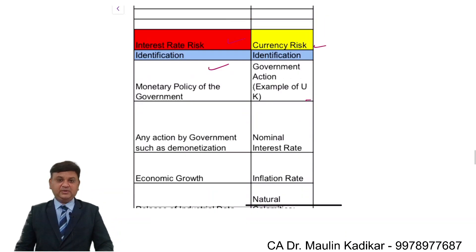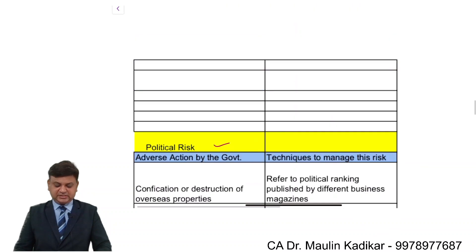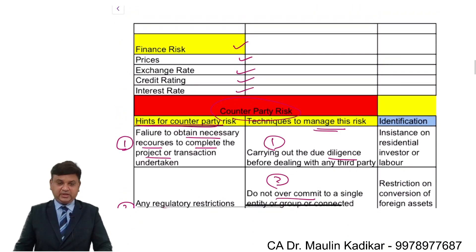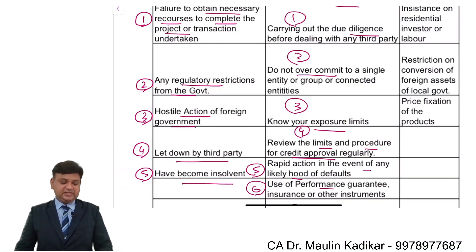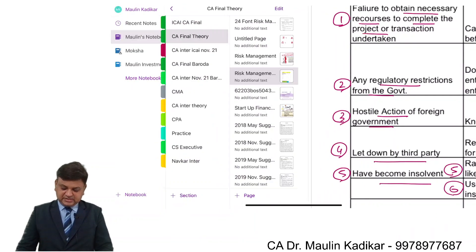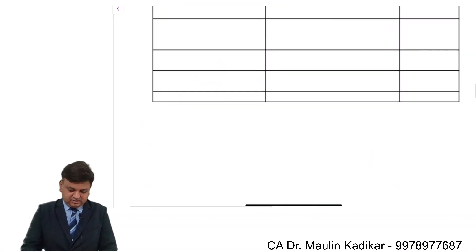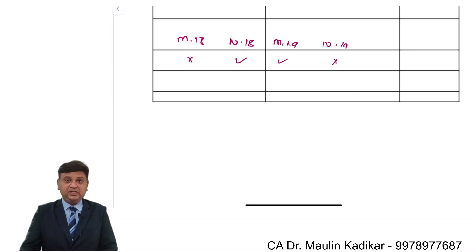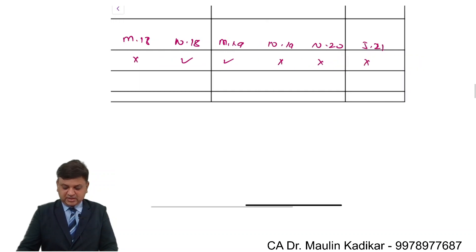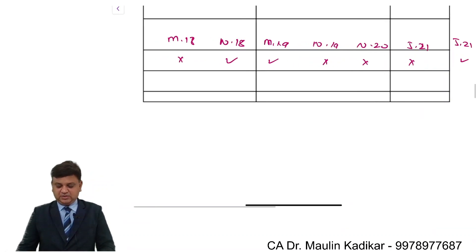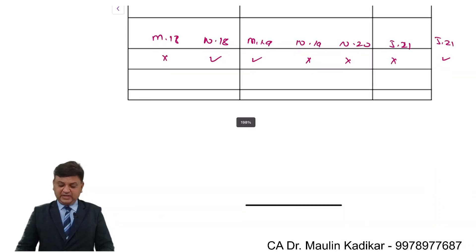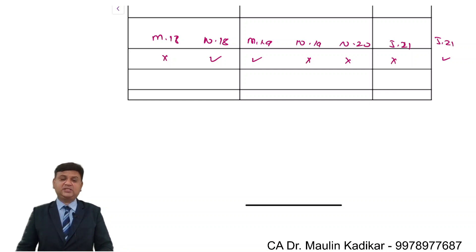This is a summary of the entire explanation covered in the chapter. From an examination point of view, this chapter was not asked in May 2018, but was asked in November 2018, May 2019, and November 2019. It was not asked in November 2020, January 2021, or July 2021 — except July 2021 where it was asked. Comparatively, it has less frequency in theoretical questions, but in practical questions it has been asked a number of times.